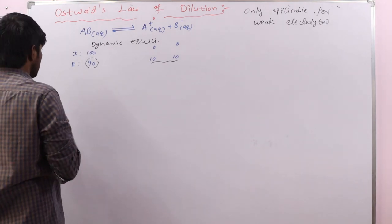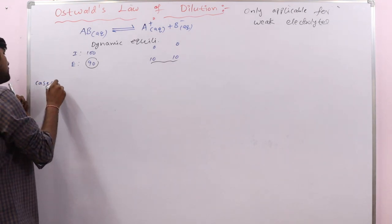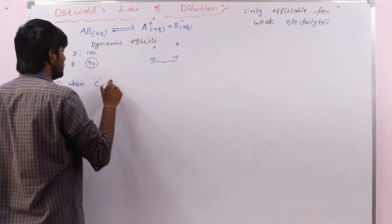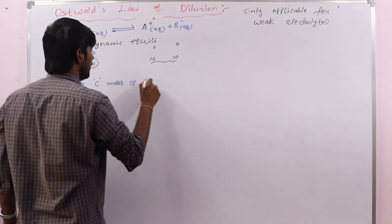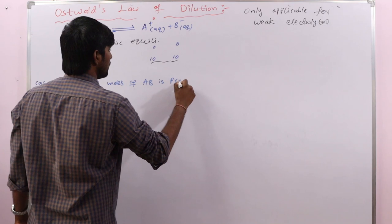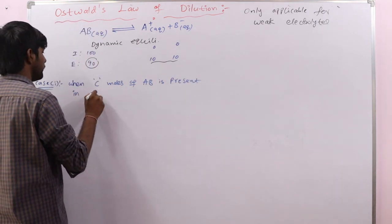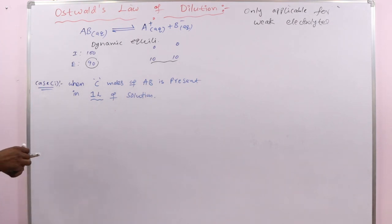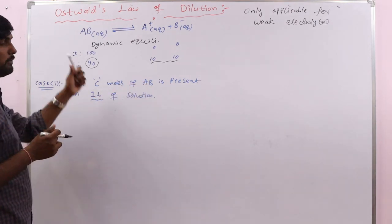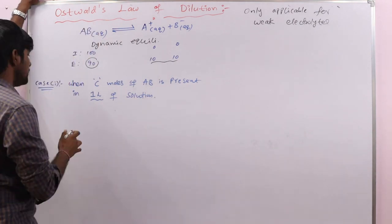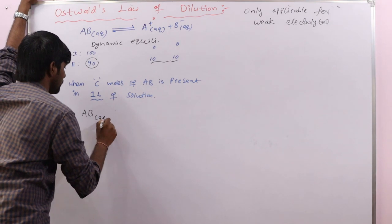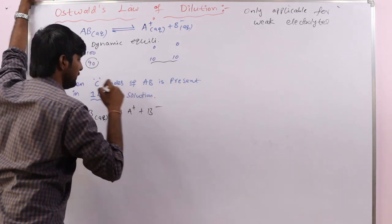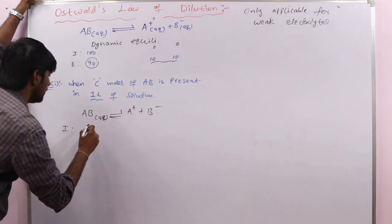We now discuss two cases. The first case: C moles of electrolyte AB are present in one liter of solution. Let us write the ICE table for the equation: AB ⇌ A⁺ + B⁻. Initially, we have C moles of AB, and zero ions are formed — all molecules are undissociated.